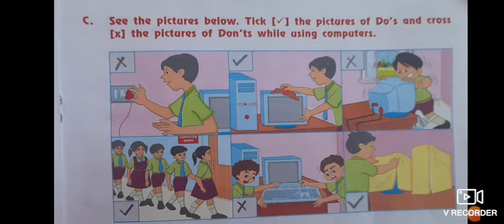So the first one is a child is playing with the wires, so that is wrong. Second is child is cleaning the computer, that is true, good thing. Third one is a child is pushing the computer which is wrong, so cross. Now the fourth one is children are moving to the computer lab in a queue or in a line, so that is true do, so tick.